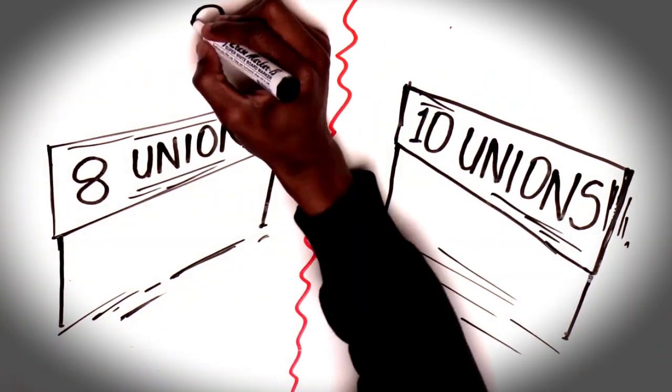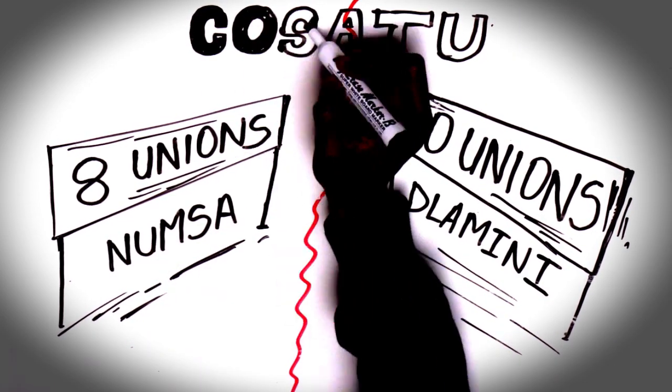This causes fundamental divisions within Cosatu. Eight unions back NUMSA and 10 others support the Cosatu president.